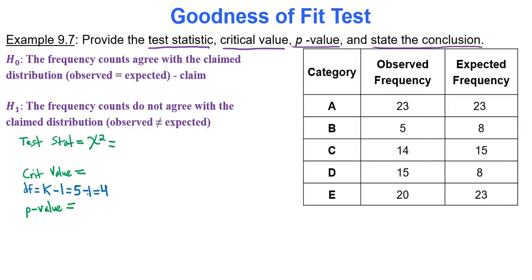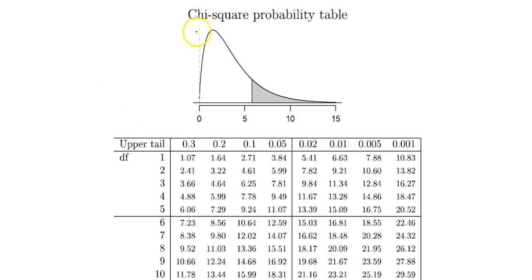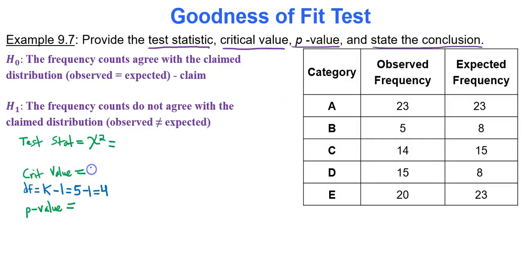Looking at the chi-squared table, notice it is right-tailed. We locate four degrees of freedom along the left-hand side, and along the top find the significance level 0.05, and look at where the row and column intersect. The critical value is 9.49 — that's what separates the rest of the curve from the critical region. I always recommend just using that table rather than learning a new process in Google Sheets to find the critical value.